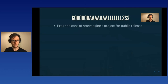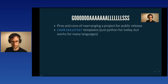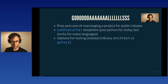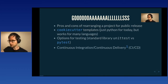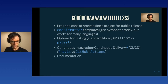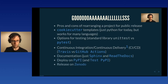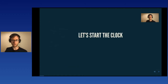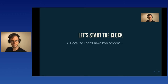The goals of this presentation: pros and cons of rearranging a project for public release, cookie cutter templates and how they can help — not just for Python but other projects — options for testing across standard libs and PyTest, the continuous integration options like Travis and GitHub Actions, documentation like Sphinx and Read the Docs, deployments on PyPI, releasing on Zenodo, and not getting that confused with Zotero, as I have many times.